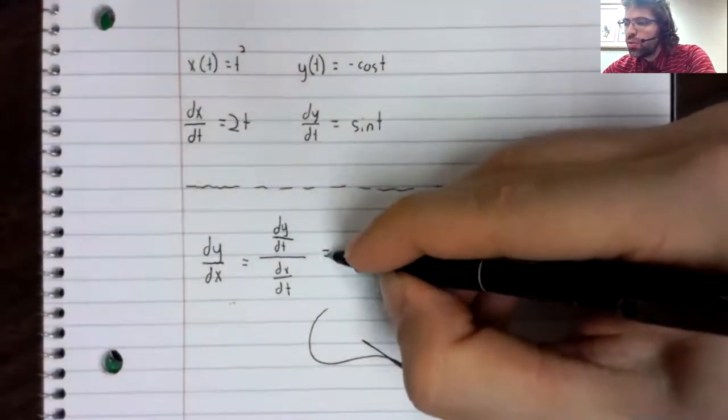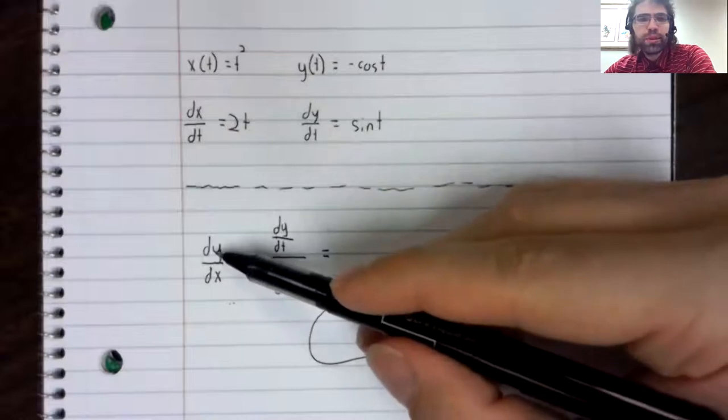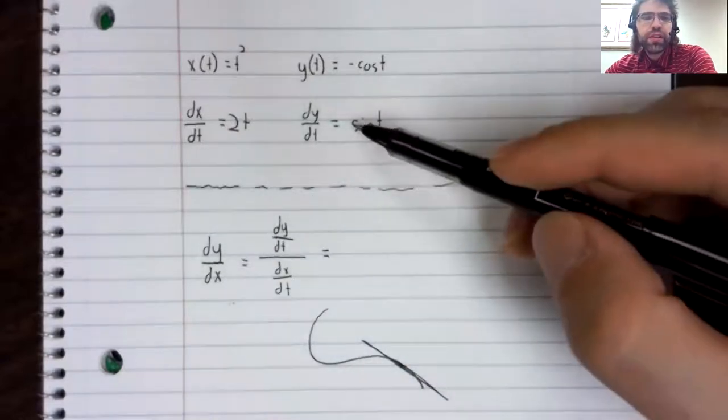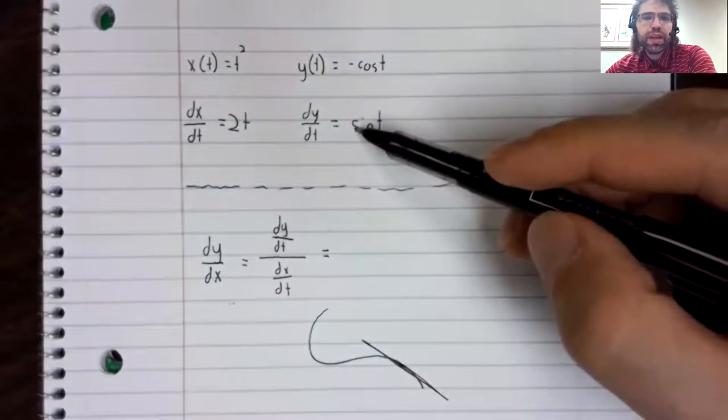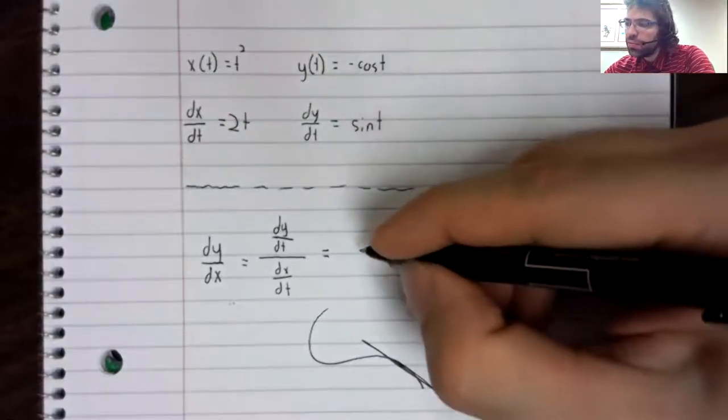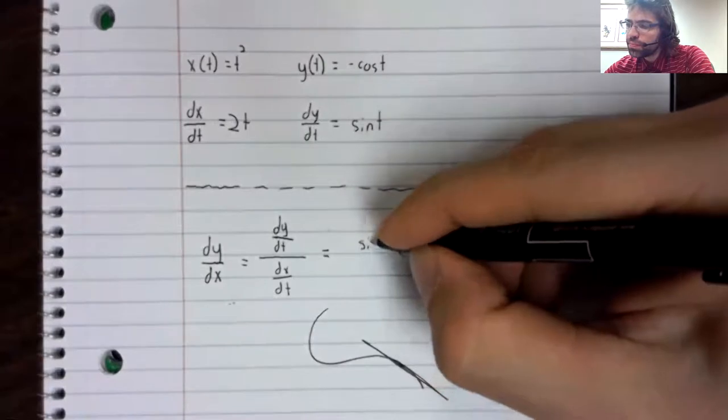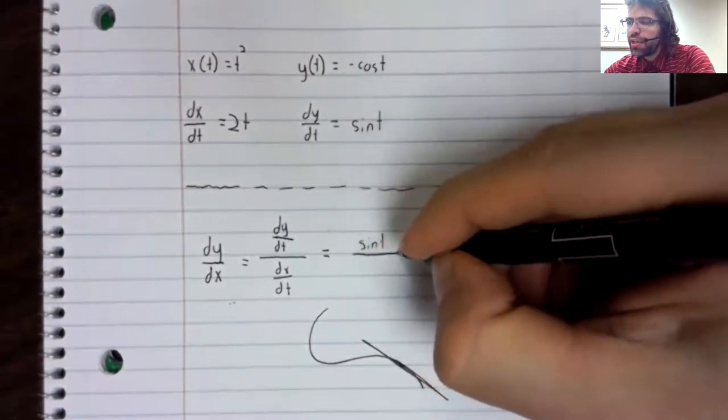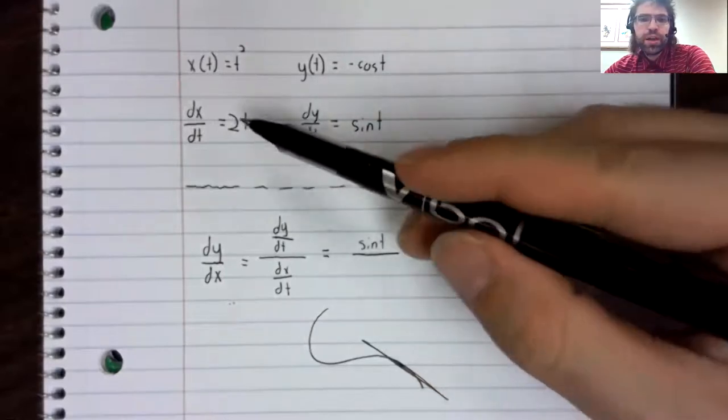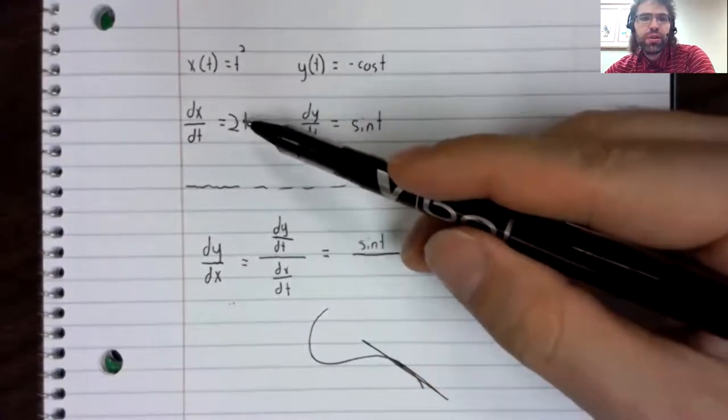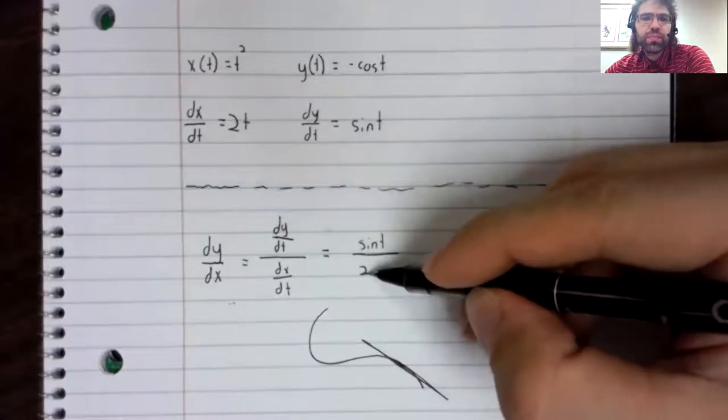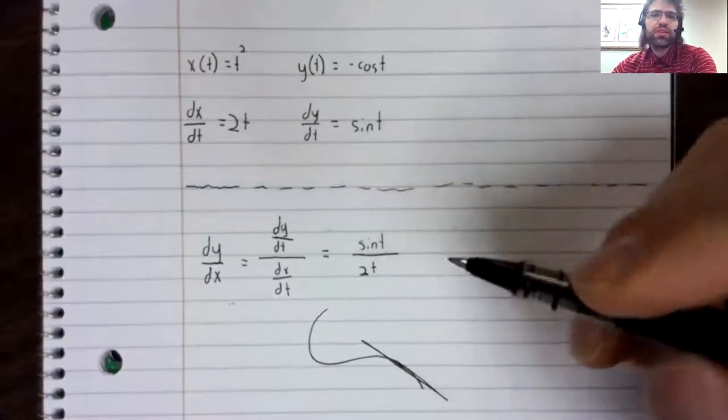So the derivative of y with respect to x is the derivative of y with respect to t divided by the derivative of x with respect to t.